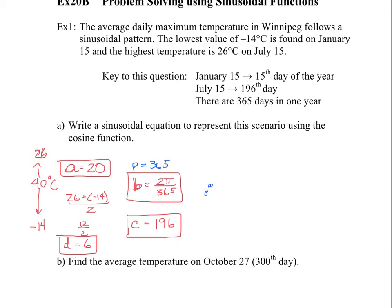All right, and now the C value. So we know, anytime we're looking for the cosine function, we're looking to find the maximum. And we know the maximum is on the 196th day. Therefore, C will be equal to 196. So it takes 196 days to get to your maximum. So that's the translation, basically to the right.